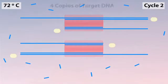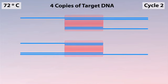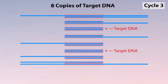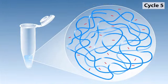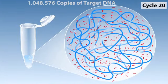In the second cycle, 2 becomes 4. In the third cycle, 4 becomes 8. And in the fourth cycle, 8 becomes 16. Each copy is a new template for the next cycle, so there's an exponential increase.